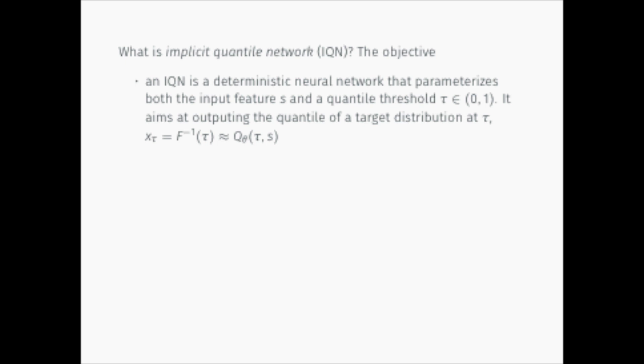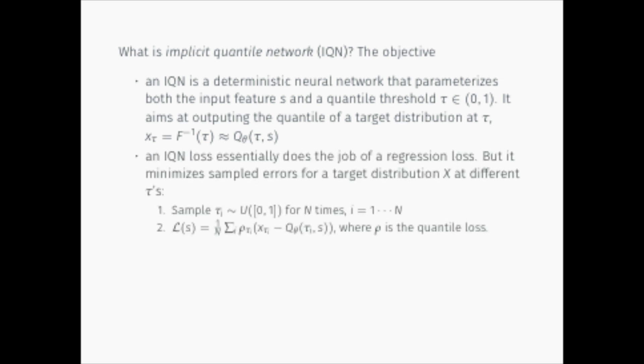An IQN is a deterministic neural network that parameterizes both the input features S and a quantile threshold tau. It then aims at outputting the quantile of a target distribution at tau. An IQN loss essentially does the job of a regression loss. But it minimizes sampled errors for a target distribution X at different quantile threshold tau.